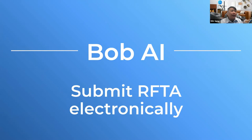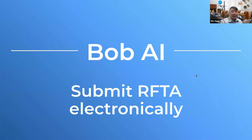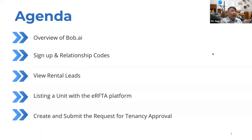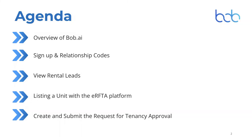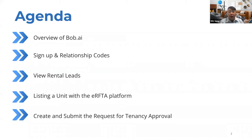What I want to run through today is how to submit the RAFTA electronically. Some of you have worked with housing authorities that are partners with us; some may be new and want to get started. Our agenda covers an overview of what Bob.ai is, sign-up and relationship codes, viewing rental leads, how to list a unit, and how to create and submit the Request for Tenancy Approval.